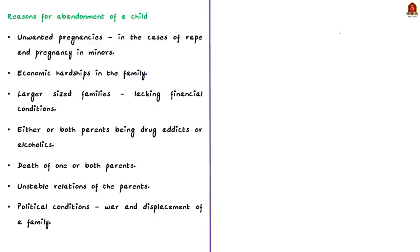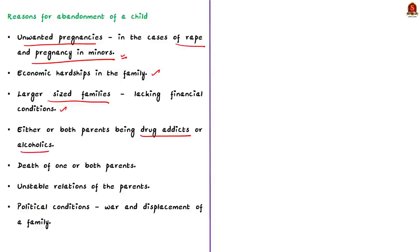The most common cause for child abandonment is unwanted pregnancies due to significant factors like rape or pregnancy in minors. Other reasons include economic hardships in the family, large family size without financial support, either or both parents being drug addicts or alcoholics, death of a parent or both parents, and unstable relations between the parents. These are the main causes for child abandonment.